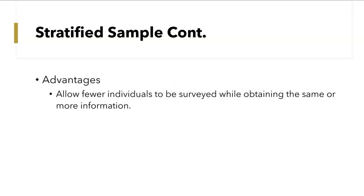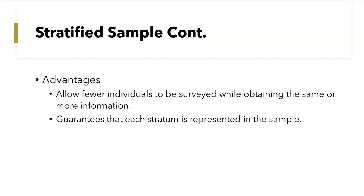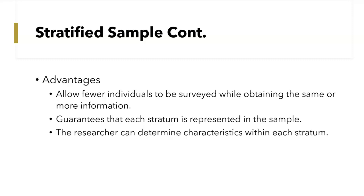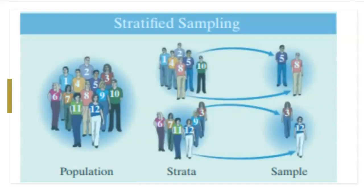Some advantages of stratified sample include: they allow for fewer individuals to be surveyed while obtaining the same information, and it also guarantees that each stratum is represented in the sample. This guarantees a mixture of Republicans, Democrats, and Independents being surveyed — versus if you only took a simple random sample, it's not guaranteed that every group is represented. The researcher can also determine characteristics within each stratum based on the results, such as how Republicans, Democrats, or Independents each answered.